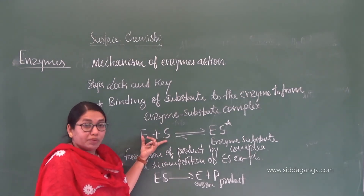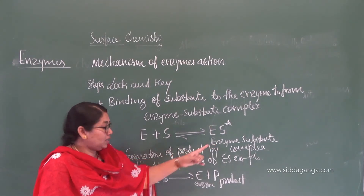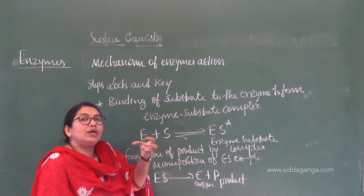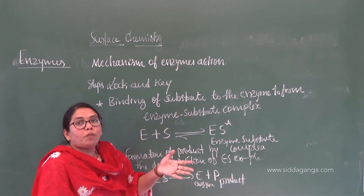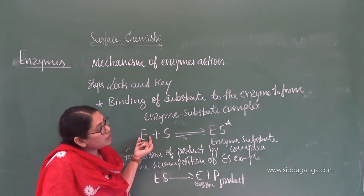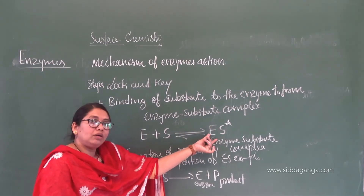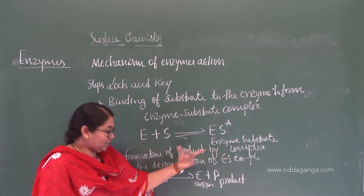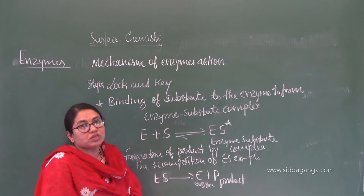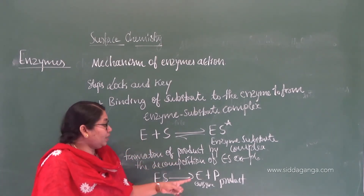To summarize the steps: E + S (reversible) → ES (enzyme-substrate complex), which upon decomposition gives enzyme + product. For example, invertase (enzyme) binds to sucrose (substrate) to form the invertase-sucrose complex, which decomposes to give back invertase along with the products glucose and fructose.